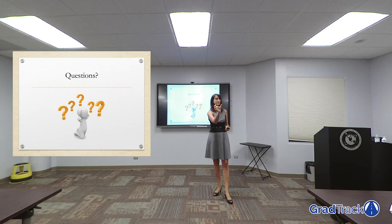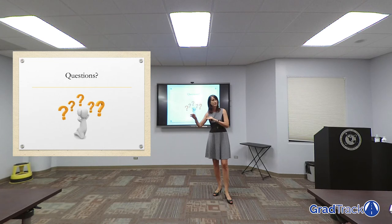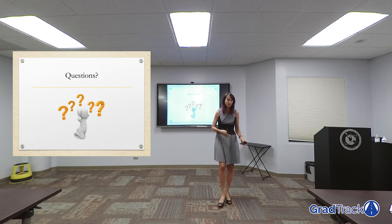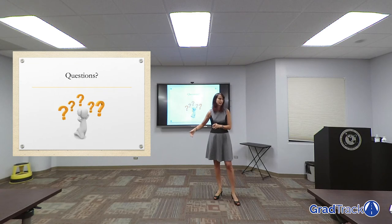Theme one: this is one particular topic area and how researchers have looked at it. Theme two: this is another area and how researchers have looked at it. Theme three, and so on — however many of those you have. As you're wrapping up your literature review, you do a little summary close, but you lead it into those research questions and hypotheses.